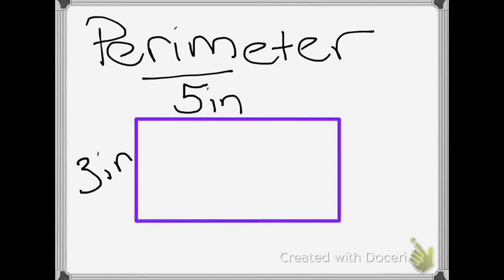So that means if this side right here is 3 inches, then the opposite side is parallel, but it's also equal. So it would be 3 inches. And I know that this side is 5 inches, so the opposite side, since it's a rectangle, is equal and parallel. So it would also be 5 inches.